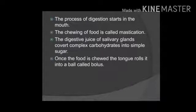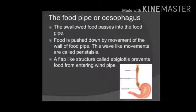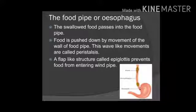The digestion process starts from the mouth itself. The chewing of food is known as mastication. Digestive juices from salivary glands convert complex carbohydrates into simple sugars. Once the food is chewed, the tongue rolls it into a ball which is known as bolus. The swallowed food passes into the food pipe, also known as the esophagus. Food is pushed down by the movement of the walls of the food pipe, which is known as peristalsis. A flap called the epiglottis prevents food from entering the windpipe, which is adjacent to the food pipe.